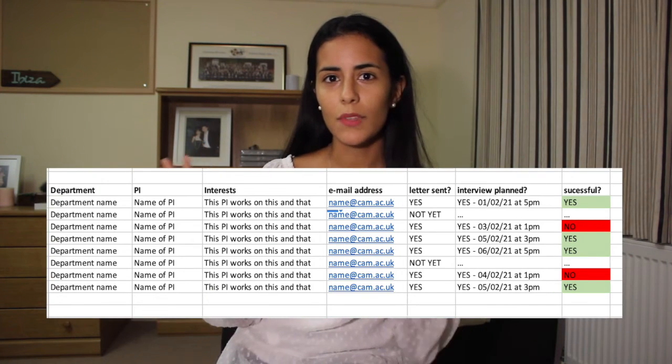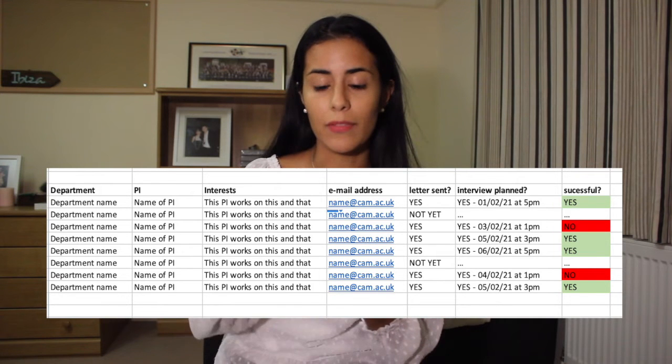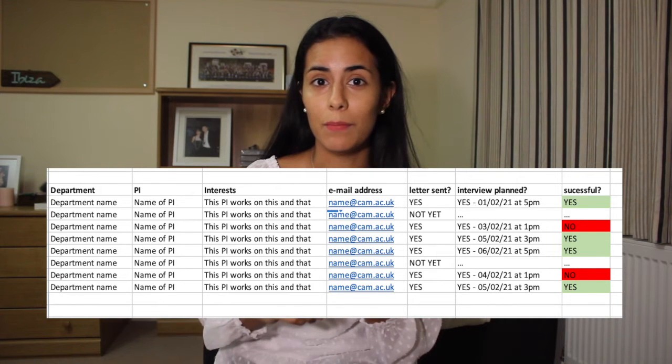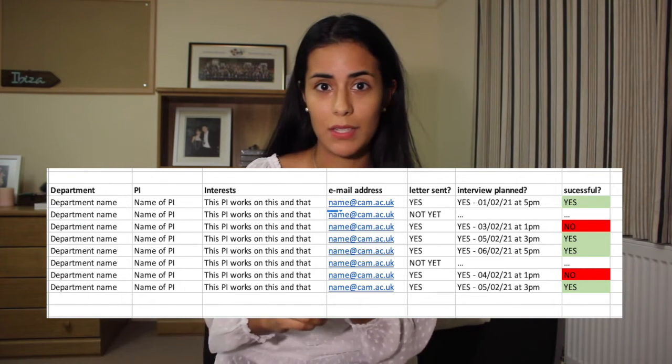Now, this is very important. Once you know which departments you really want to work at, you need to be organized. Because it can happen that if you go crazy and start applying to many, many different labs, departments, or institutions, you don't remember who was who. So what I recommend is to create a spreadsheet where you can have the name of the department, the name of the leader, boss, or PI — principal investigator.